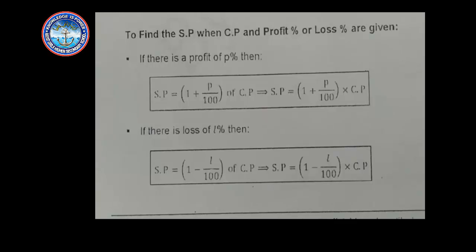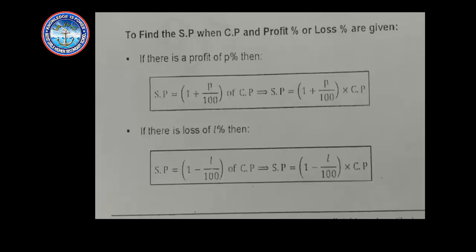To find the selling price when cost price and profit percent or loss percent are given: Number one, if there is a profit, the selling price is equal to (1 + profit/100) × cost price. If there is a loss, the selling price is equal to (1 − loss/100) × cost price.